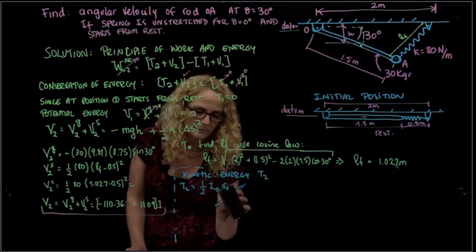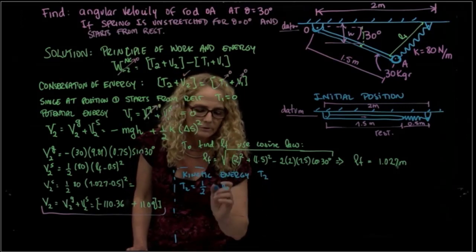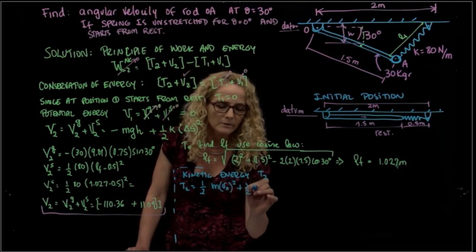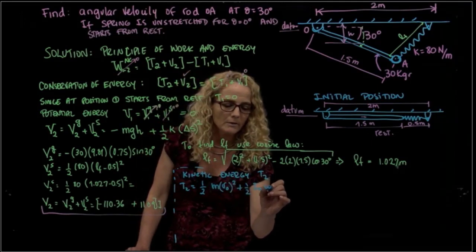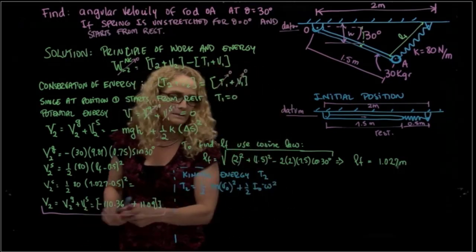Sorry, let me write it completely, and then we can make zero. So this is 1/2 mass times velocity of the point squared plus 1/2 mass moment of inertia, angular velocity of the bar squared. And as I said, this is zero.